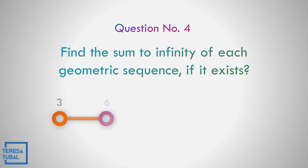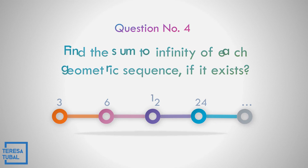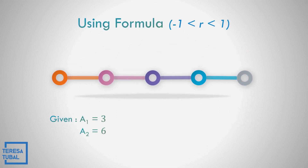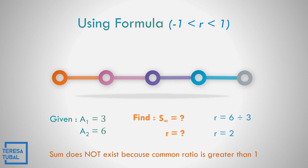Find the sum to infinity of the geometric sequence 3, 6, 12, 24, and continuing. Let us get the first term, which is 3, and the second term, which is 6. The common ratio is found by dividing the second term by the first term: 6 divided by 3 equals 2. Is 2 less than 1? No, 2 is greater than 1. It means the sum does not exist because the common ratio is greater than 1.